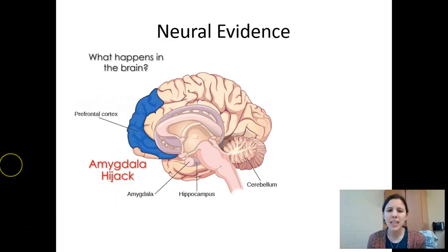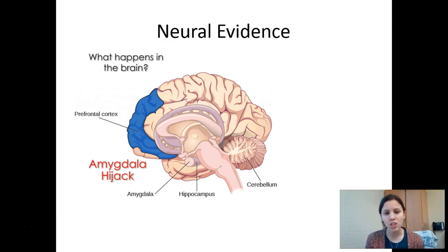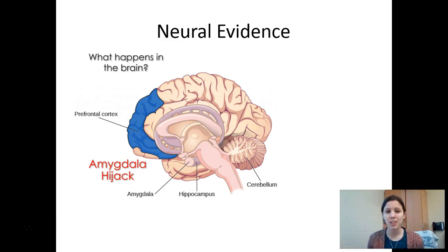Goleman's evidence for emotional intelligence is something called the amygdala hijack, also known as the HPA axis — the hypothalamic-pituitary-adrenal axis. When you're in a big fight-or-flight sympathetic response, your hypothalamus controls your pituitary, which tells your adrenal glands to release adrenaline, epinephrine, and norepinephrine. Those hormones change the way your brain prioritizes information. In an amygdala hijack, smart people can do really dumb things — like when you've memorized a speech but then get up in front of a class and forget everything.